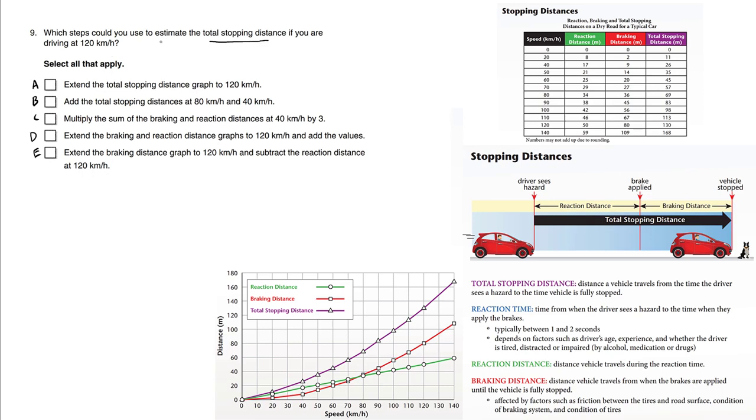Now the goal is to estimate the total stopping distance. Choice A. To find the total stopping distance, can we extend the total stopping distance graph to 120 kilometers an hour? So the total stopping distance graph is purple. We're going to go all the way to 120 kilometers an hour. It's going to be around here. And if we extend out towards the right, can we really calculate this purple graph? And certainly we can.